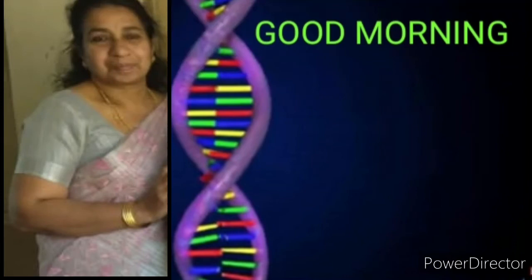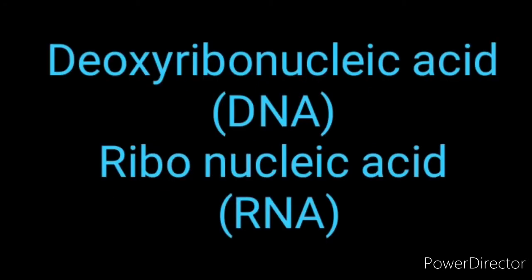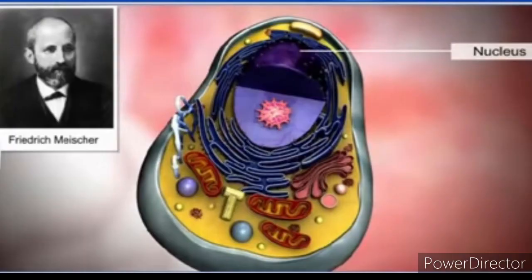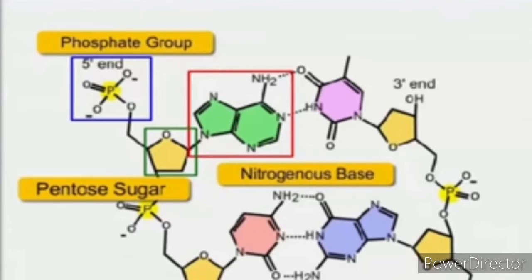Hello students, welcome to biology class, Chapter 6: Molecular Basis of Inheritance. We know that DNA and RNA are the two types of nucleic acids present in almost all living organisms. DNA, as an acidic substance present in the nucleus, was first identified by Frederick Miescher in 1869. He named it nuclein. Later, Altmann gave the name nucleic acid because of the presence of phosphoric acid.